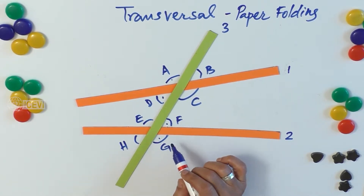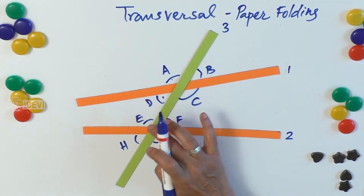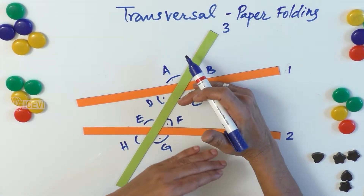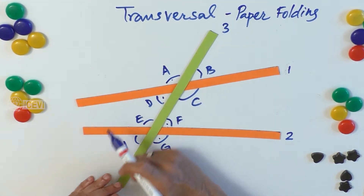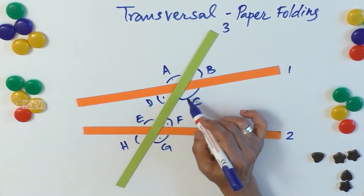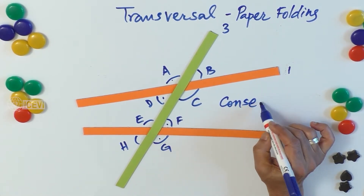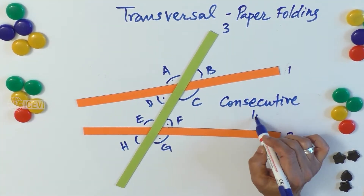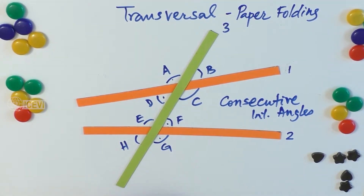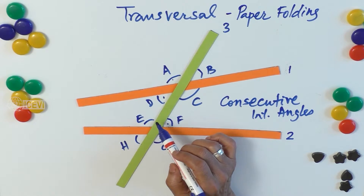Let us see what we mean by consecutive interior angles. We know that D, C, E, F are called interior angles because they are between the two lines when the transversal passes through them. C and F are called consecutive interior angles because they are on the same side.